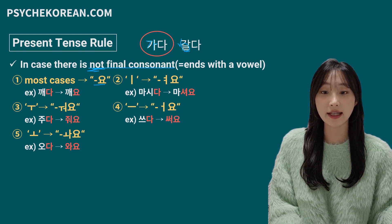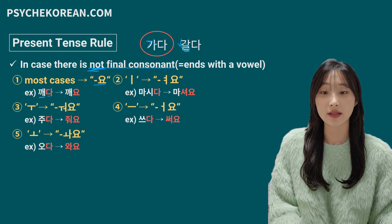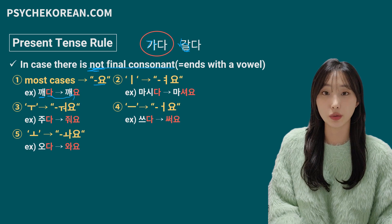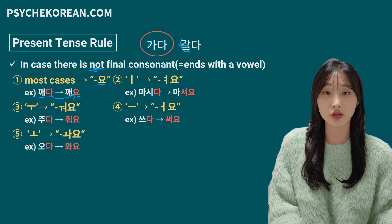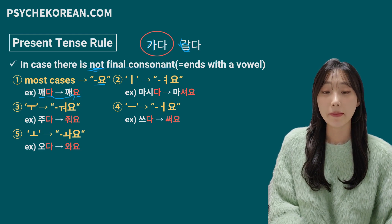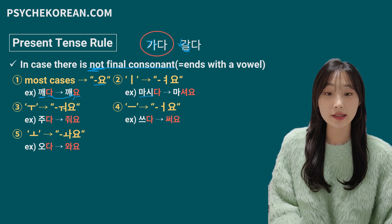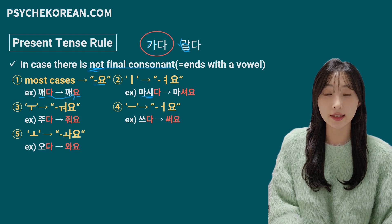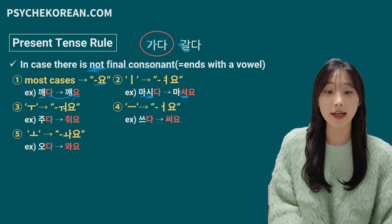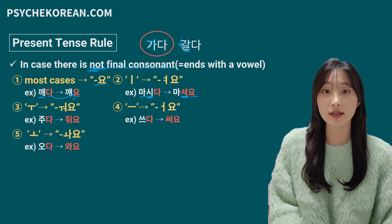For example, 깨다, which means 'wakes up' — this doesn't have a final consonant, so 다 is conjugated to 요. The second sub-case: if the vowel is 이, 여요 has to be added. For example, 마시다 — the word stem doesn't have a final consonant and the vowel is 이, so 이 is changed to 여요, giving 마셔요.